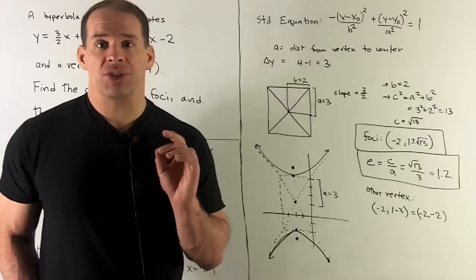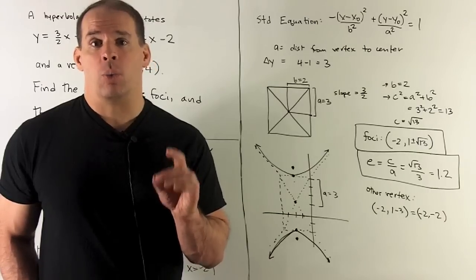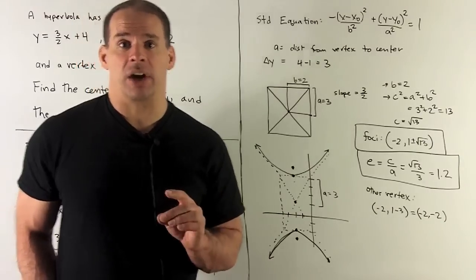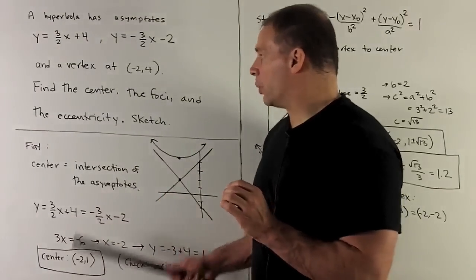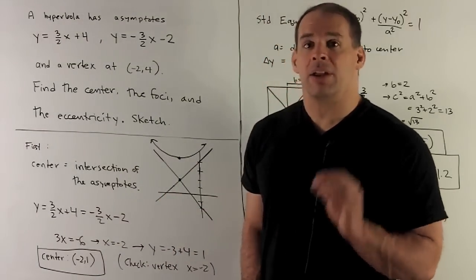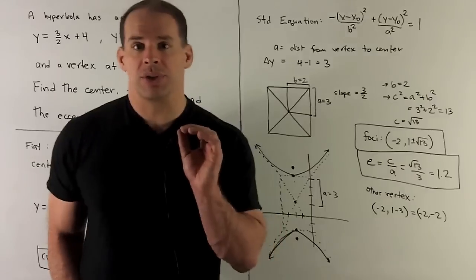To get a, a is just going to be the distance from one of the vertices to the center. In this case, we have our two points. So we'll note the distance is going to be 3. So a is equal to 3.